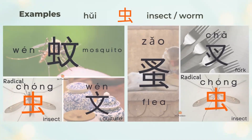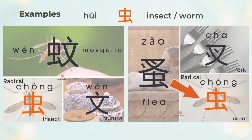蚊 means mosquito. 蚊 is the left 虫 (insect) and the right 文 (culture). 文 is the phonetic of 蚊. 蚤 means flea. 蚤 is the top 爪 (fork/claw) and the bottom 虫 (insect).